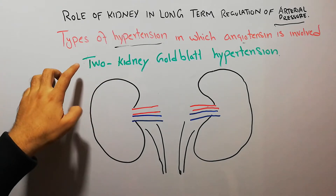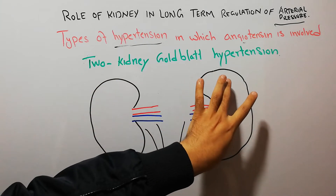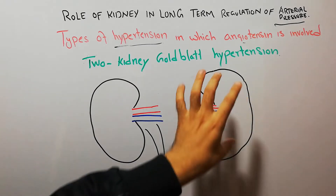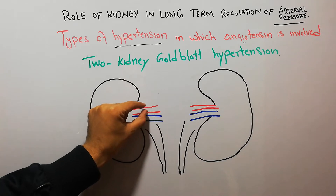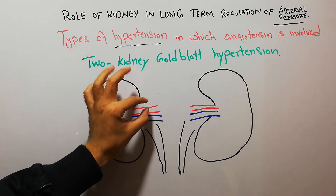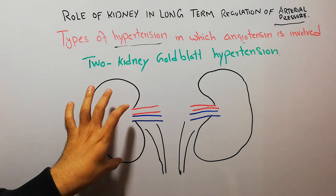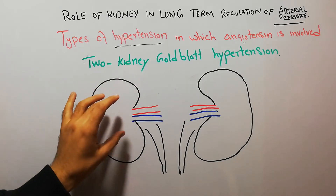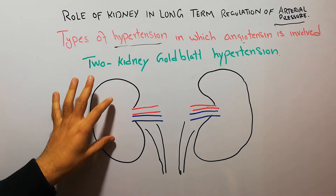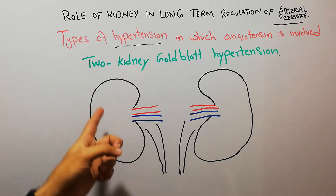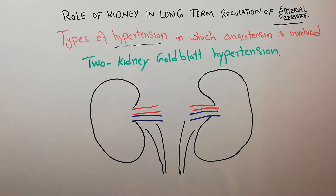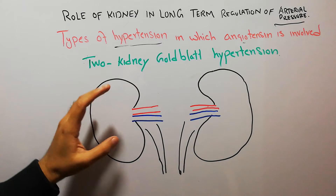In 1-kidney Goldblatt hypertension, first one kidney is removed, and the renal artery of the second kidney is constricted or clamped. After that, hypertension develops. Due to clamping the renal artery, renin secretes and acutely raises the blood pressure. Then, due to the effects of renin, aldosterone causes retention of salt and water, which raises body fluids.